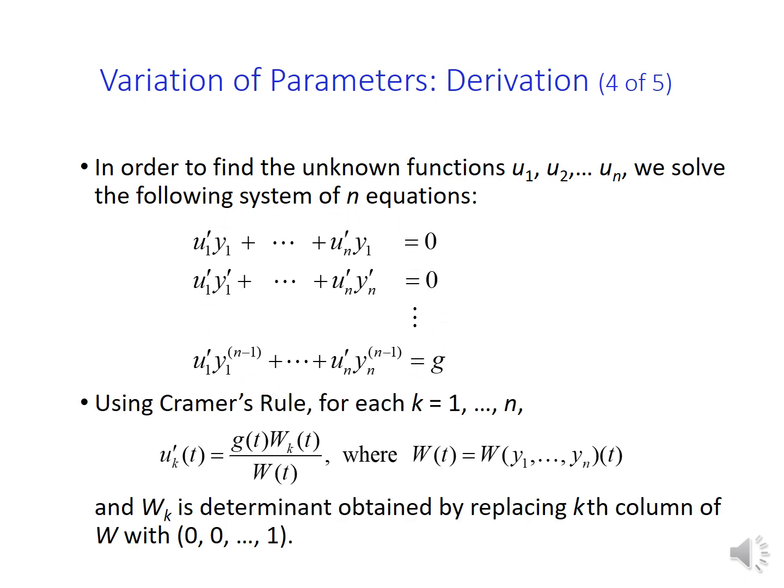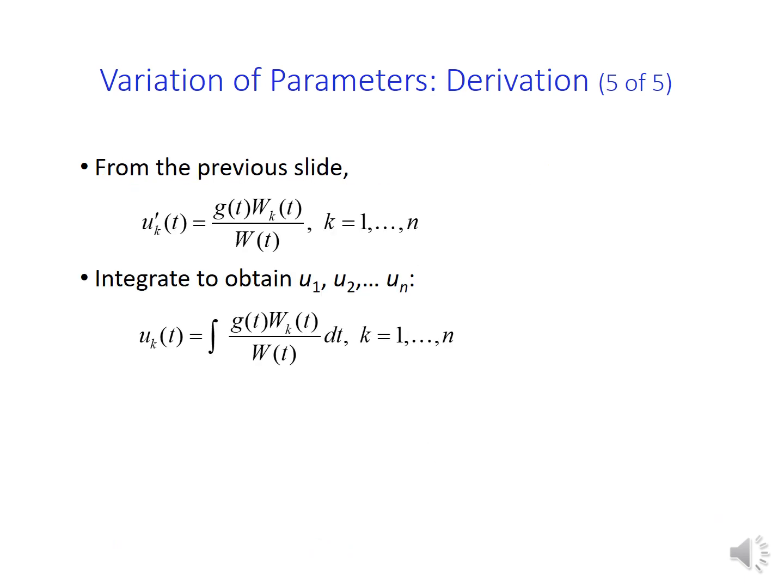This system can be solved by using Cramer's rule, and afterwards, the terms uk primes are given by a quotient involving the function g, the Wronskian, and w sub ks. And w sub ks are the determinants obtained by replacing the kth column of the Wronskian with the vector zero zero one. I will explain it in details in the example.